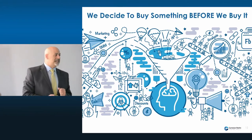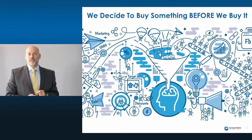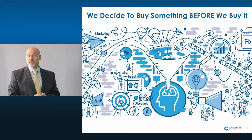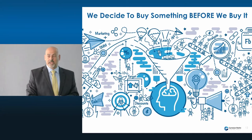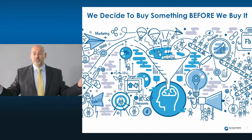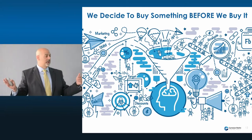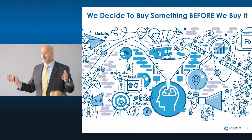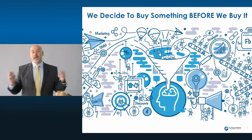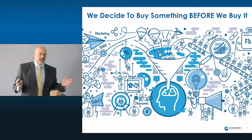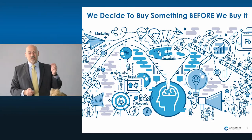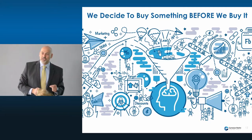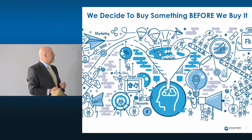We decide to do something before we do it. Think of yourself as a consumer. Maybe this past weekend you went out and did some shopping. Did you just hop in the car and aimlessly drive around? You probably knew specifically what you had to do, where you were going — you might even have had a list. So that further validates that the decision to buy really takes place in the mind.